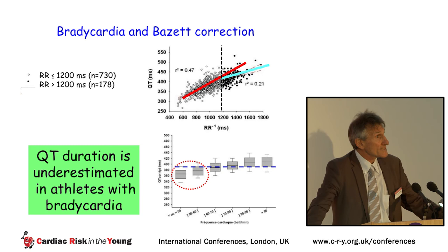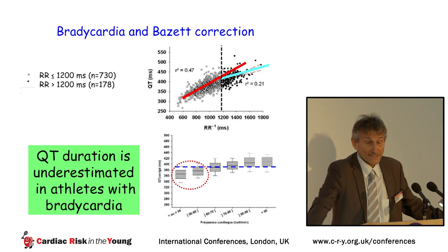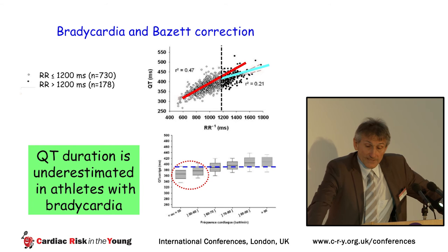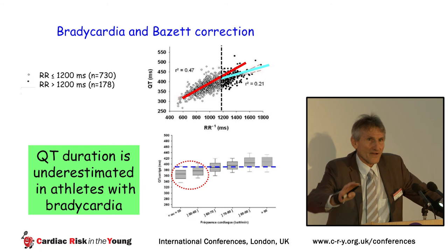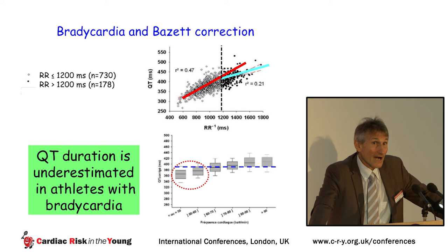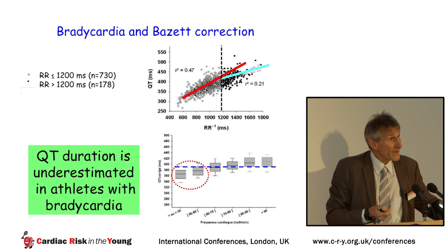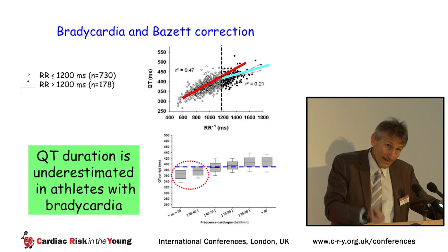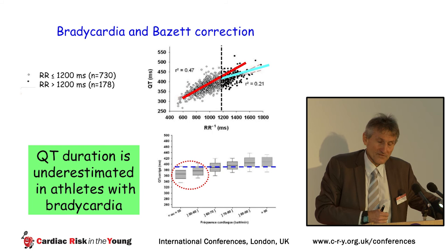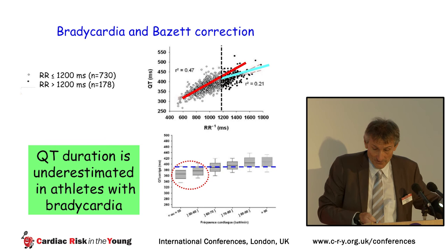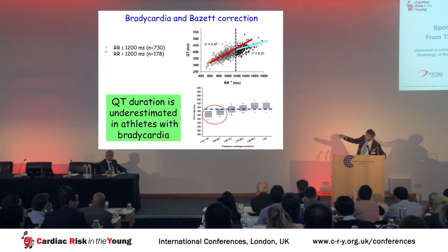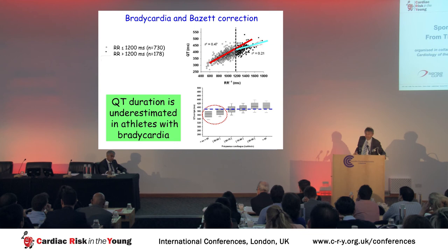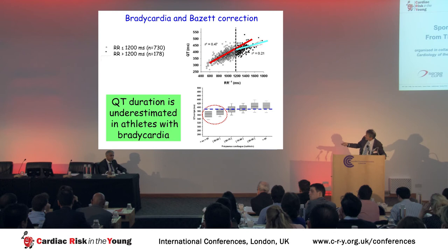An important point concerns the Bazette formula in athletes. Bazette stated his formula is valid for heart rates between 55–80 beats per minute. However, many athletes have bradycardia. Comparing the slope of the QT-RR relationship in athletes with heart rate below 50 versus above 50 bpm shows different slopes, meaning the Bazette formula underestimates QT duration in athletes with bradycardia.